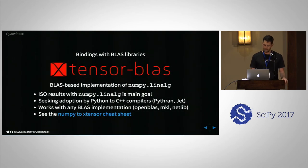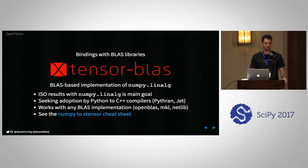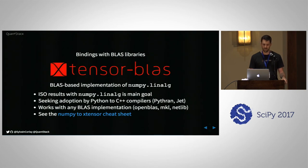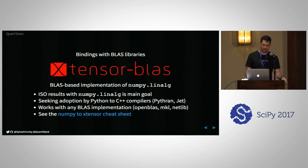We recently released xtensor-blas, which is the BLAS-based implementation of NumPy's linalg. In the NumPy-to-xtensor cheat sheet we provide most of the features of NumPy.linalg with exactly the same API, and we are trying to have behavior as close to NumPy as possible. One reason is that we're seeking adoption by C++-to-Python compilers like Pythran and Jet, talking to the authors of those projects about using xtensor as a backend. It works with any BLAS implementation — OpenBLAS, MKL, or NetLib — and is thoroughly tested for each.